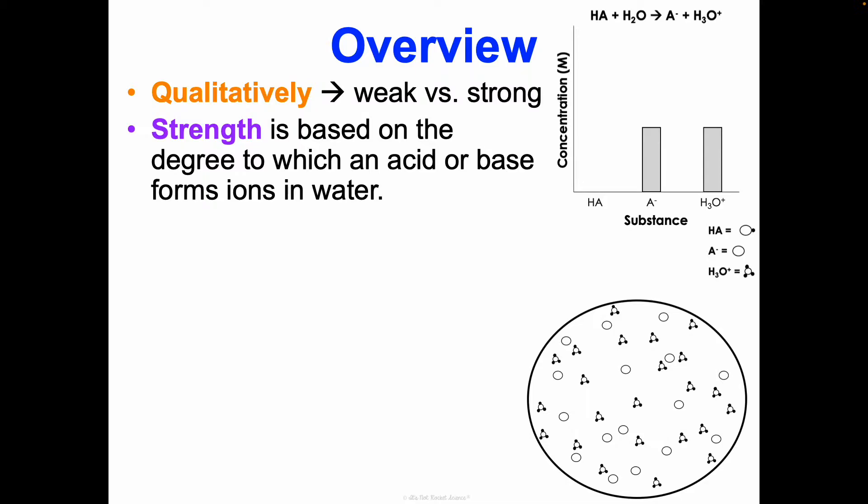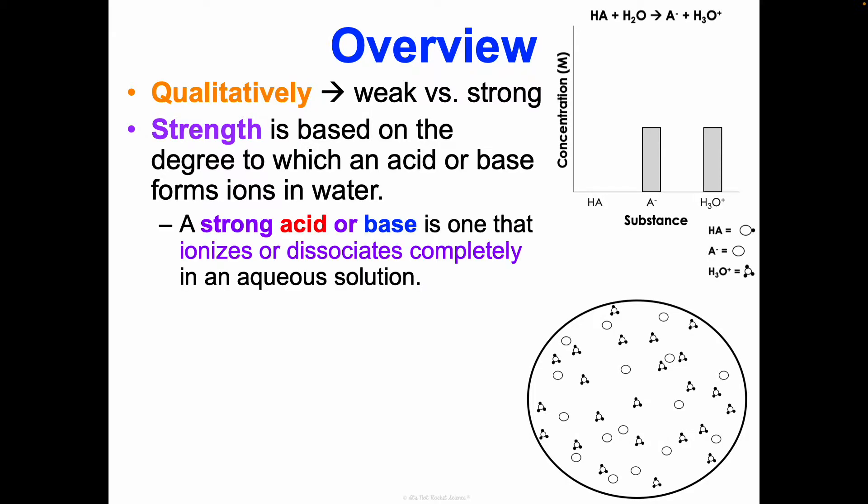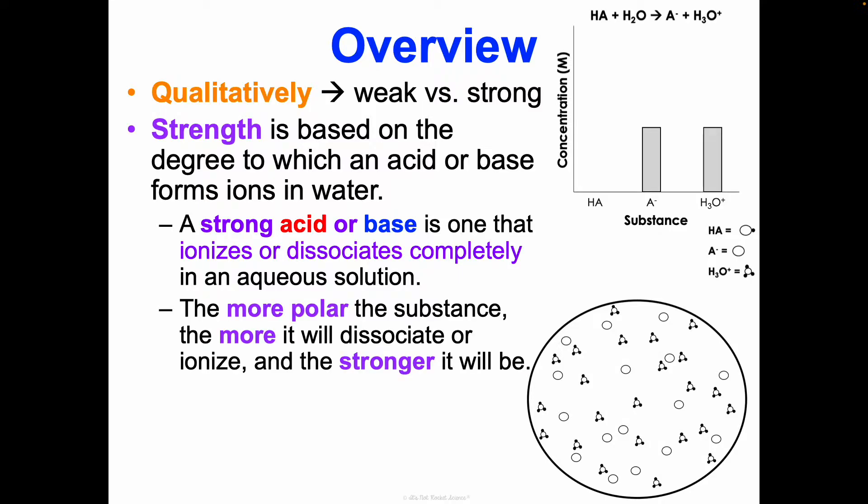This is very important. A strong acid or base is one that completely ionizes or dissociates in an aqueous solution. So a strong acid would totally ionize and a strong base would totally dissociate. What we see is that the more polar a substance is, the more it will dissociate or ionize, and thus the stronger it would be considered.